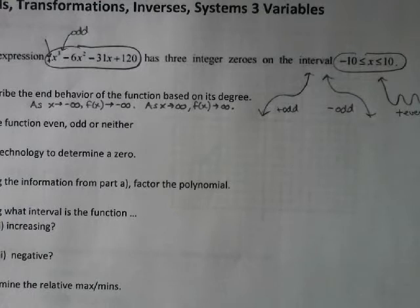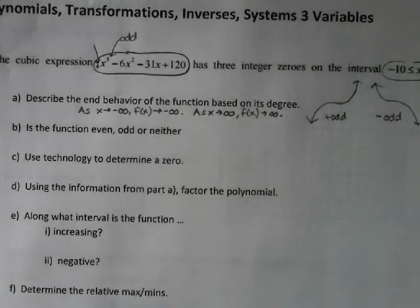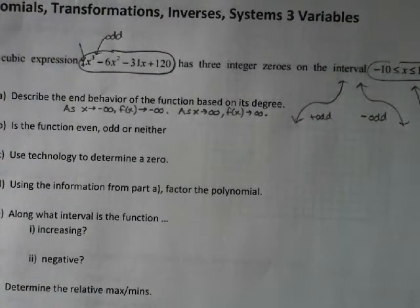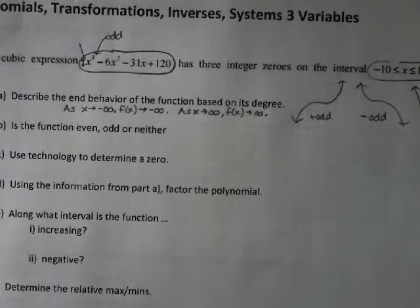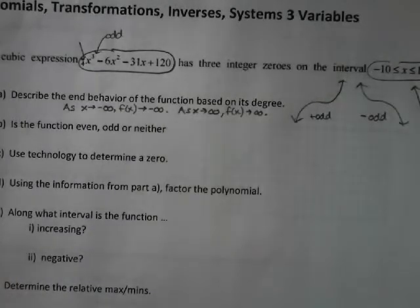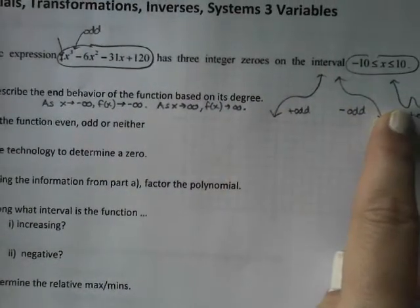I put two questions side by side. The next question is: is the function even, odd, or neither? That's different from having an even or odd degree. Does anyone remember the difference? If it's even, it can be reflected over the y-axis. Correct. If it's odd, it can be reflected over the origin. Correct. The odd degree stuff is all about end behavior.